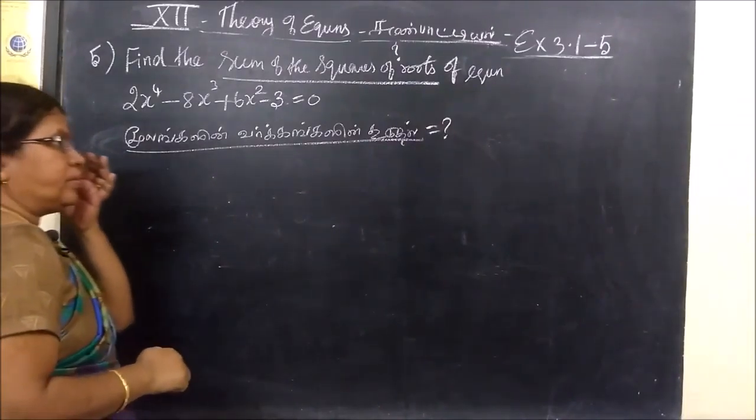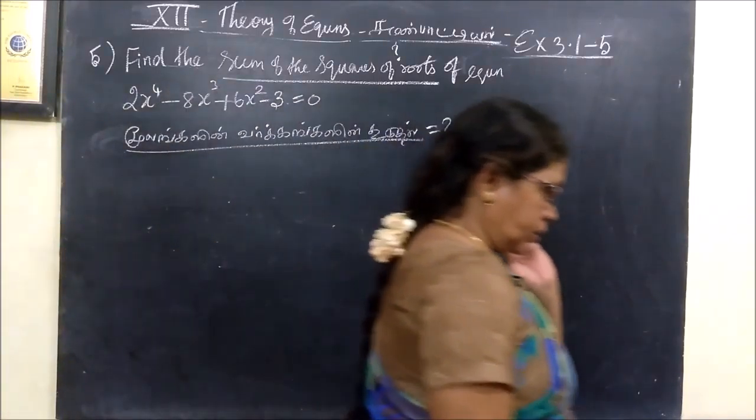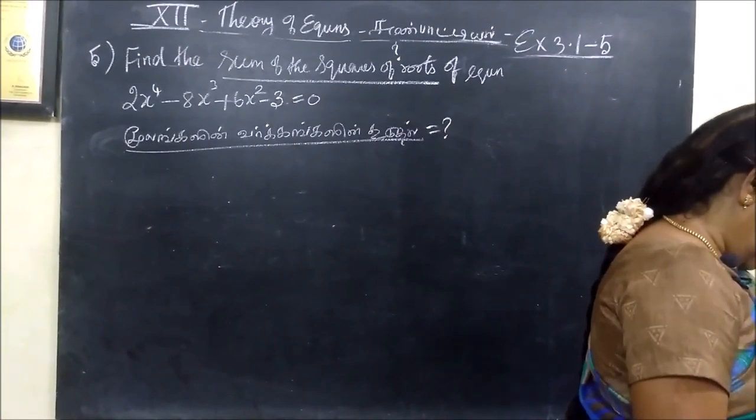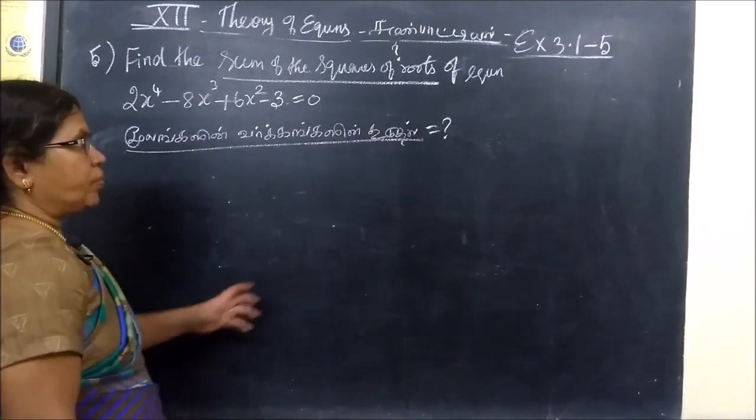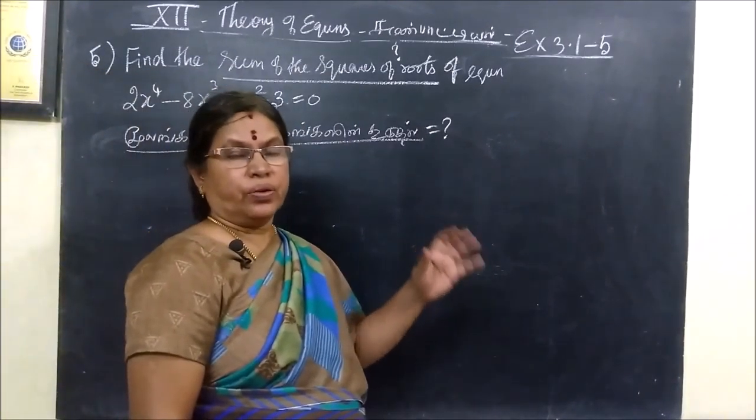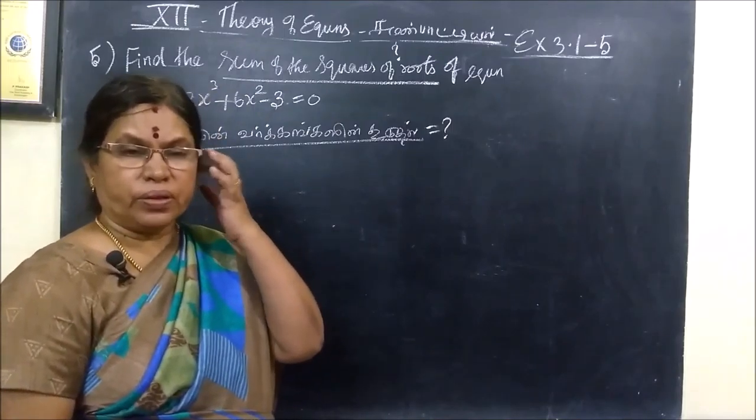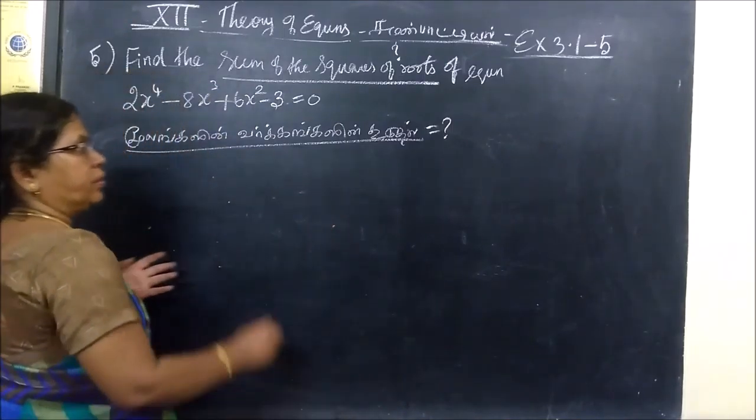Next exam, exercise 3.1, question number 5. Find the sum of the squares of the roots of the cubic equation. Sum of the squares, squares squared.